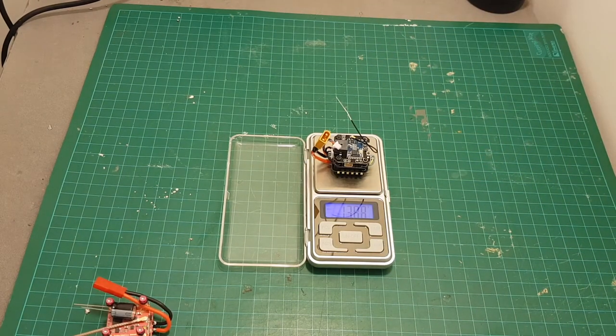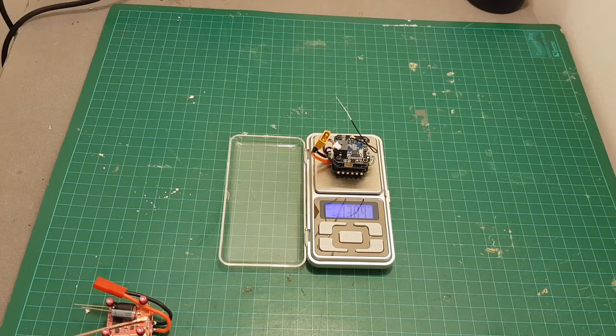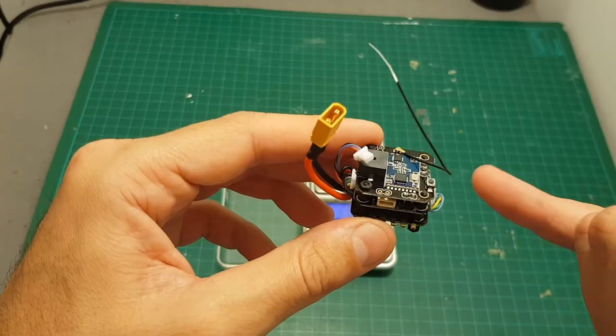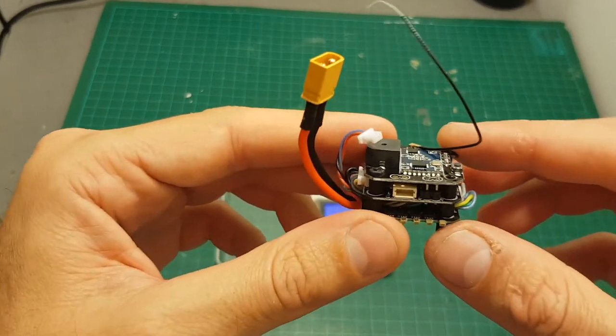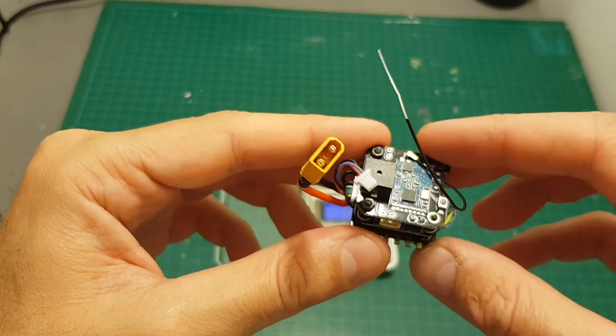Just as a comparison the weight of the Eachine Minicube is 13.88 grams but you have to remember that this one doesn't have a VTX but it does have a receiver on top.